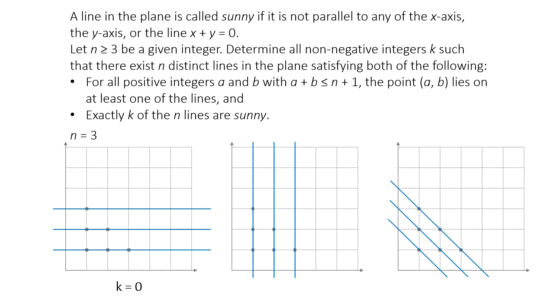What if we want one sunny line? In the diagram, there is a non-sunny line that passed through only one point. Since it's only passing through a single point, we can draw it in any direction and make it sunny. So k equals 1 is always possible.